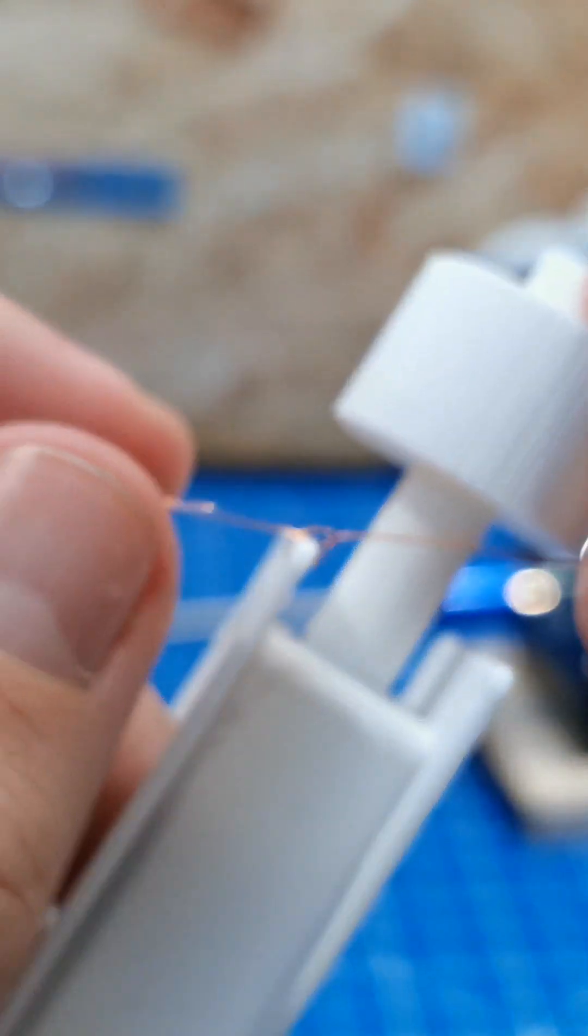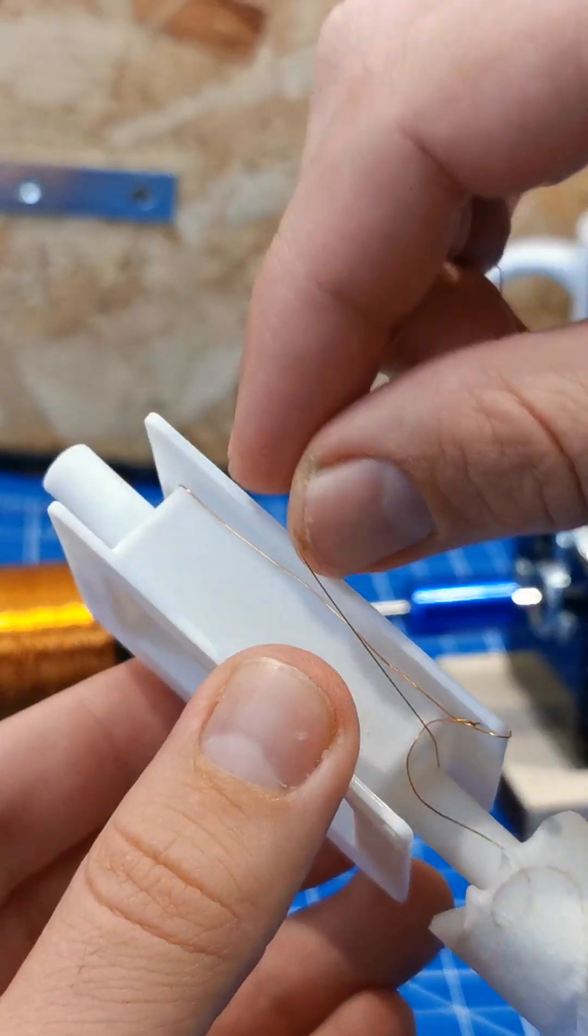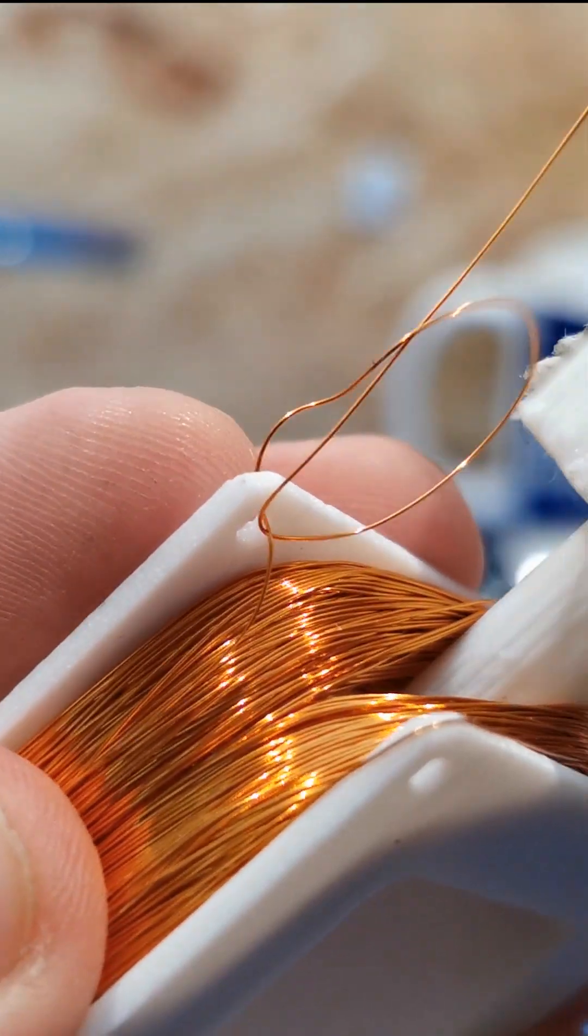Secure the wire to the rotor with plenty of excess. Wrap the wire around it about 600 times and then secure the end.